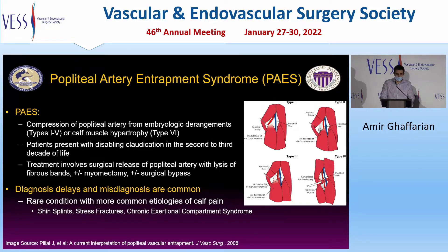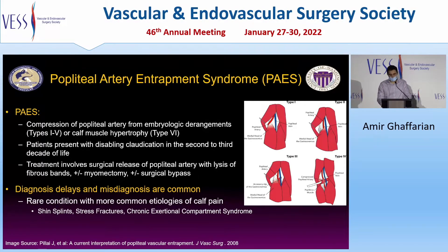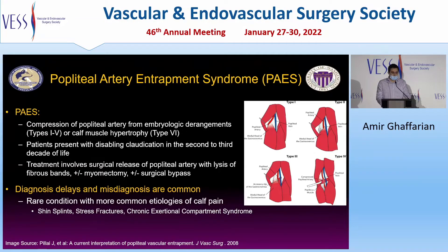These patients typically present with disabling claudication in the second to third decade of life, and treatment is surgical with release of the popliteal artery by lysing fibrous bands or muscular attachments, possible gastrocnemius myomectomy, and possible surgical bypass.